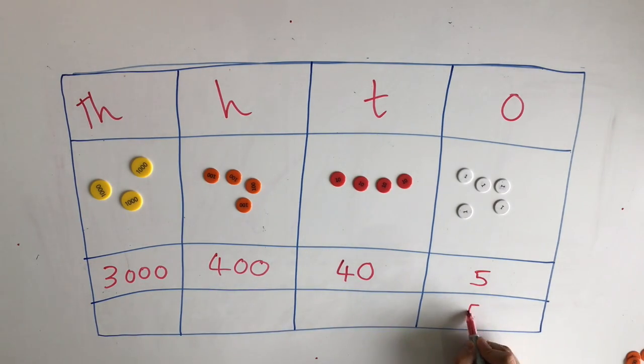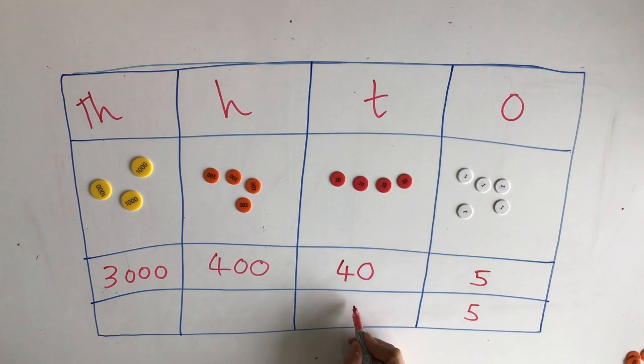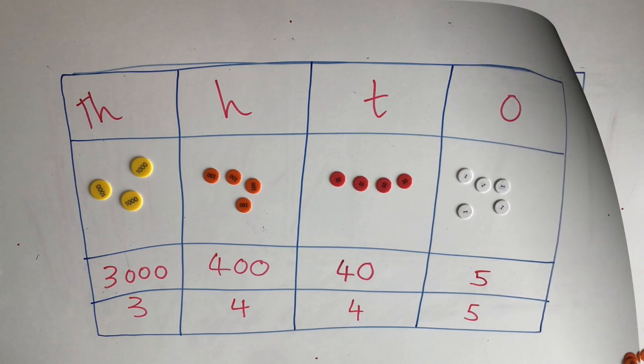So we have five, we have four tens, we have four hundreds, and we have three thousands. So the number we've got here is three thousand four hundred and forty five. Let's take a look at another example.